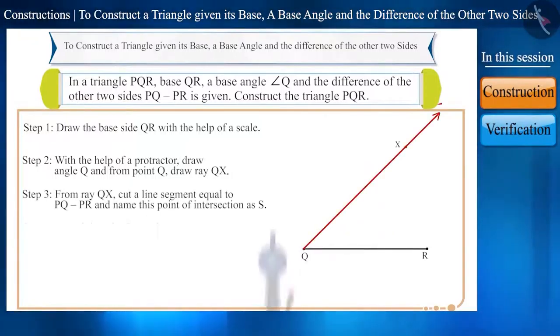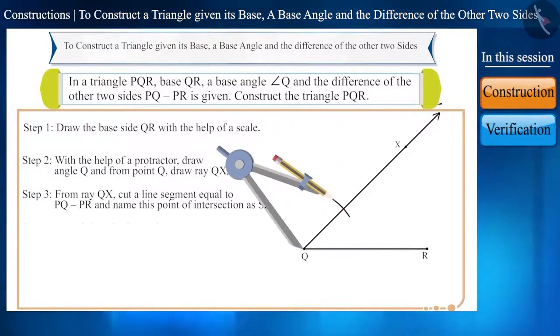Step 3. From ray QX, cut a line segment equal to PQ minus PR, which is equal to the measure of the difference of the length of the two sides, and name this point of intersection as S.